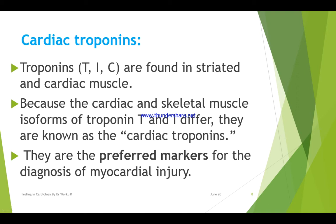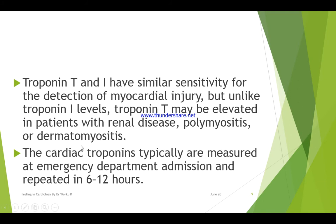These cardiac biomarkers are not usually released by cardiac muscle. They are only released when there is injury to the cardiac muscle, be it ischemia or infarction. Troponin T and I have similar sensitivity for detection of myocardial injury, but unlike troponin I levels, troponin T may be elevated in patients with renal disease, polymyositis, or dermatomyositis.